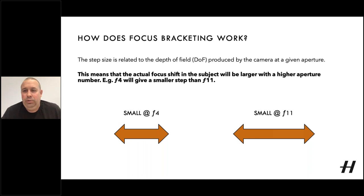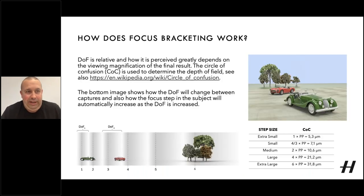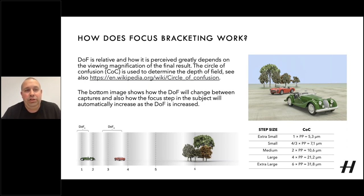As the camera will automatically make all the calculations for you, the only thing that really needs consideration is how many images to make in the sequence. In most cases, it is best to set a number that is too high rather than too low. The camera will automatically stop when the lens cannot be focused further or closer, so as long as your focus steps go beyond your furthest focus point on the image, that should be all that matters. There is also a more advanced theory around circle of confusion — if you want to find out more on that, do a search for it or look on Wikipedia.